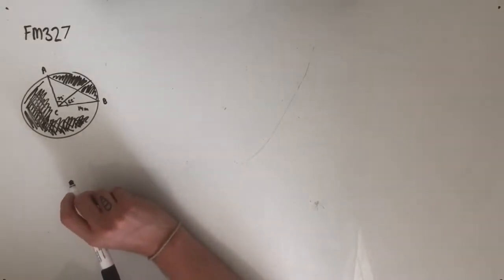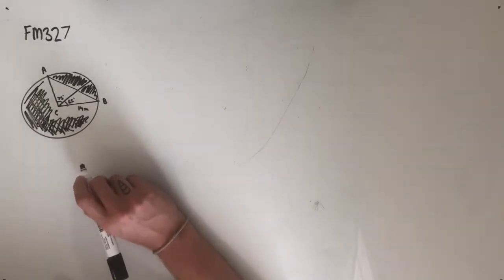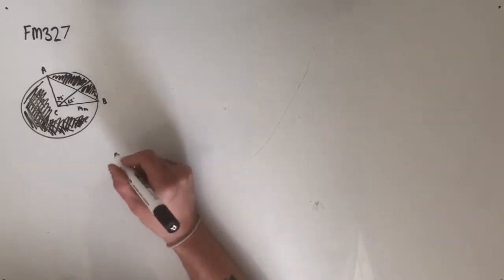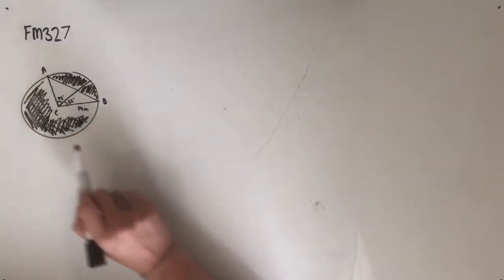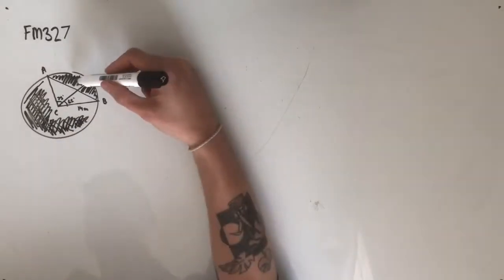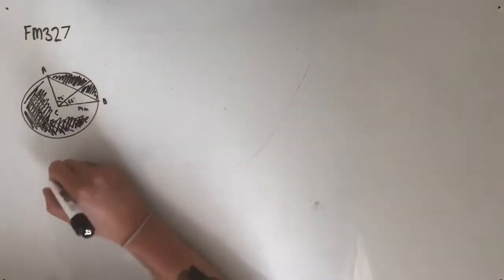We're then asked, removing triangle ABC formed by the segments, the area of the shaded region can be found using the formula, and then we're given five choices. So the way we're going to lay out this question, first of all, if we wanted to find the shaded area, you can see by my shading here, we're going to find the area of the circle.